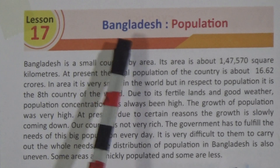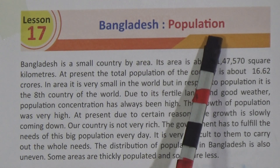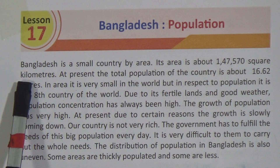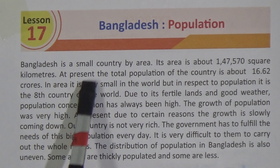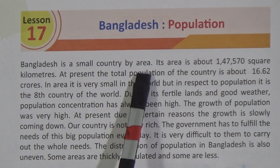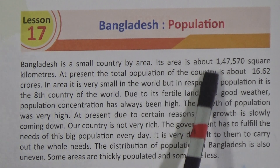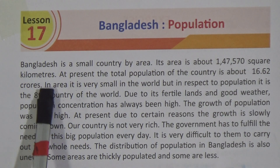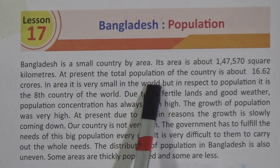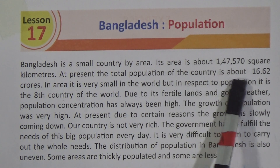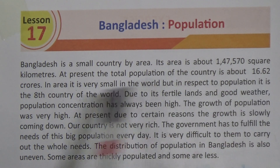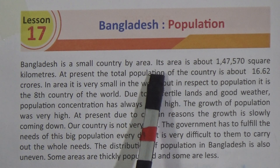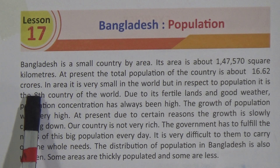This lesson is titled 'Bangladesh Population,' so this lesson is about the population of Bangladesh. Bangladesh is a small country by area — its area is about 147,570 square kilometers. At present, the total population of the country is about 16.62 crores. So the area is very small but the population is quite high.